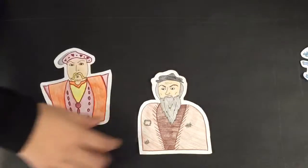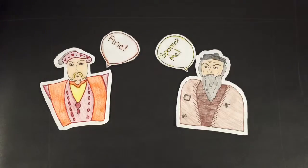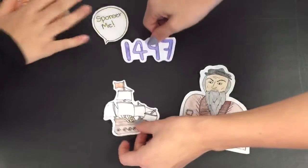He convinced King Henry VII to sponsor him, and the king issued letters patent, giving John Cabot the right to set sail in 1497.